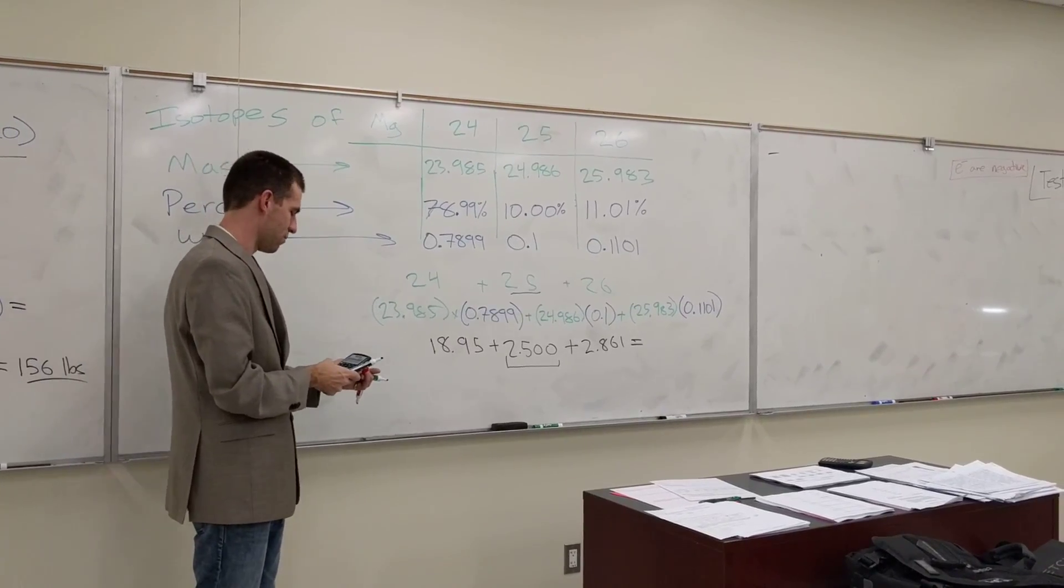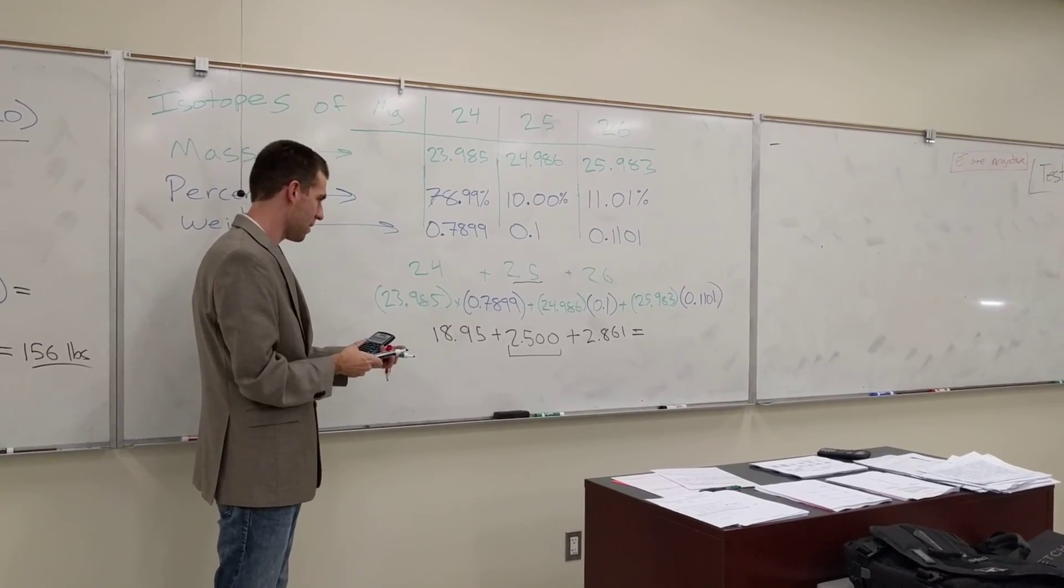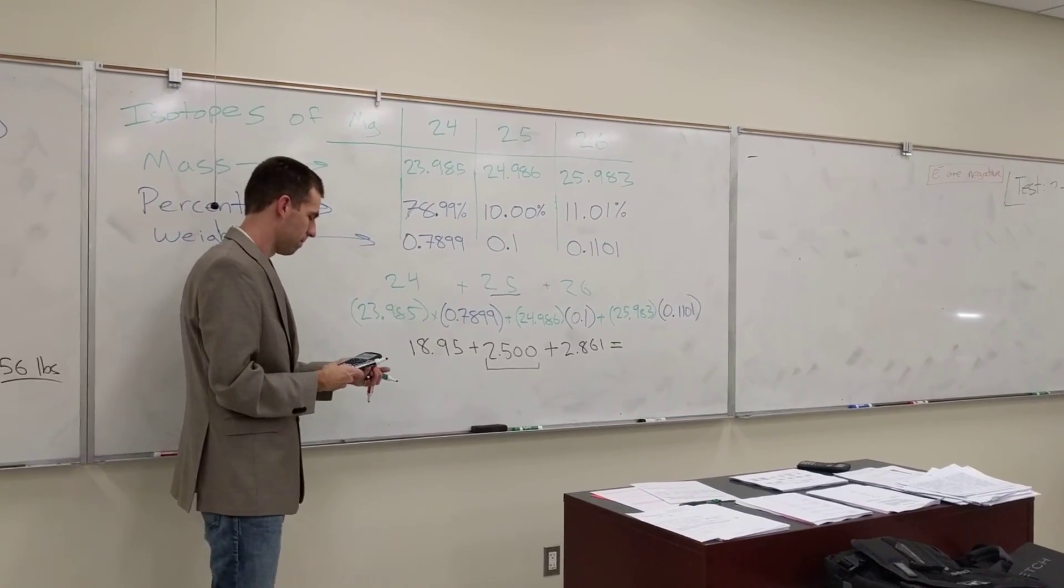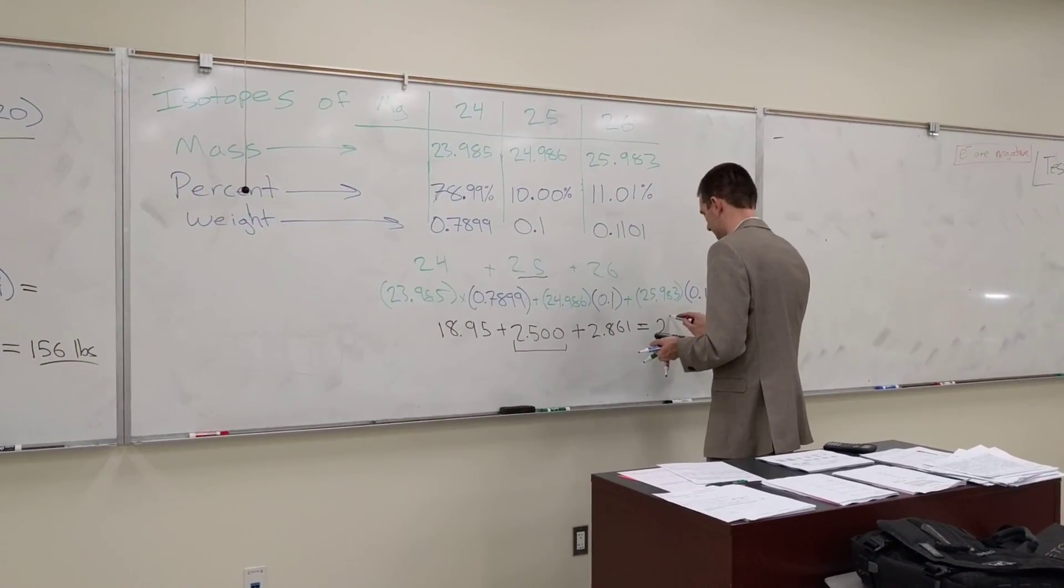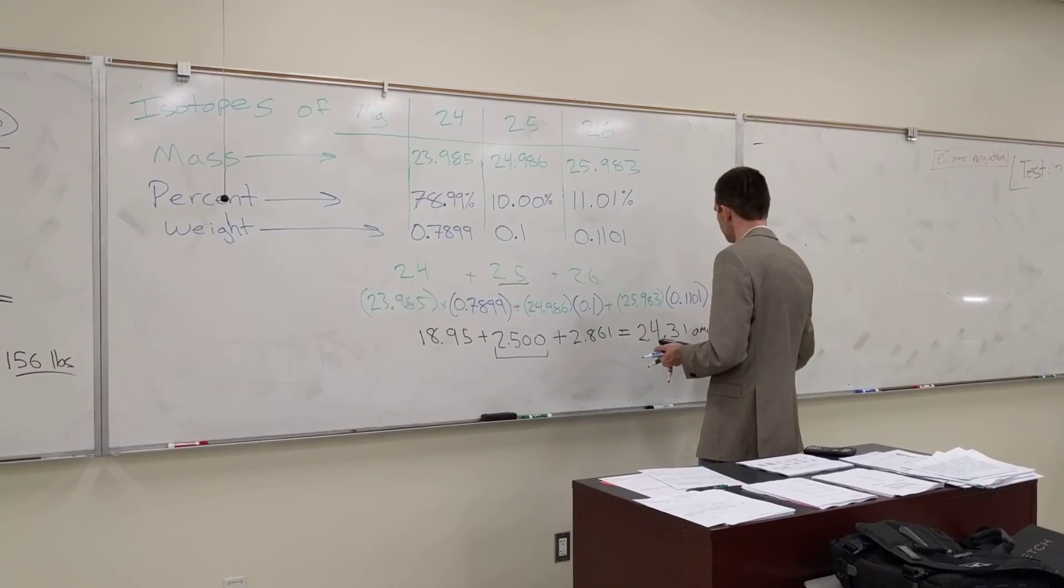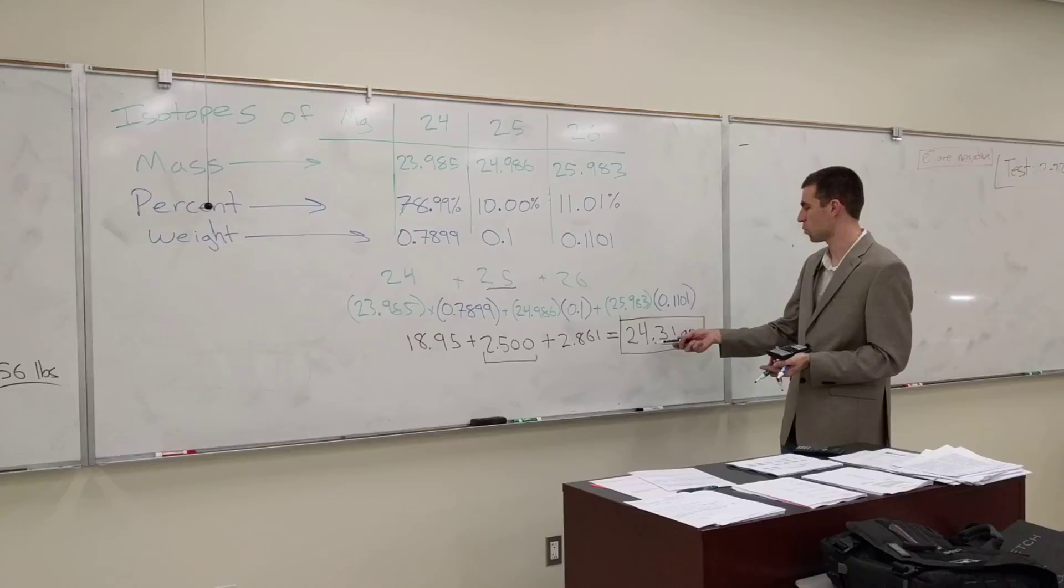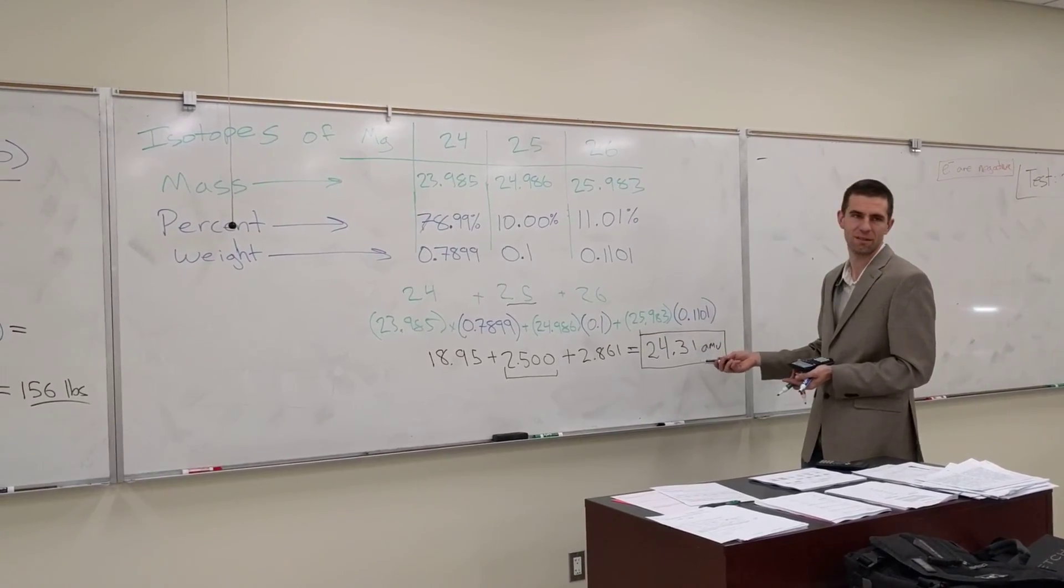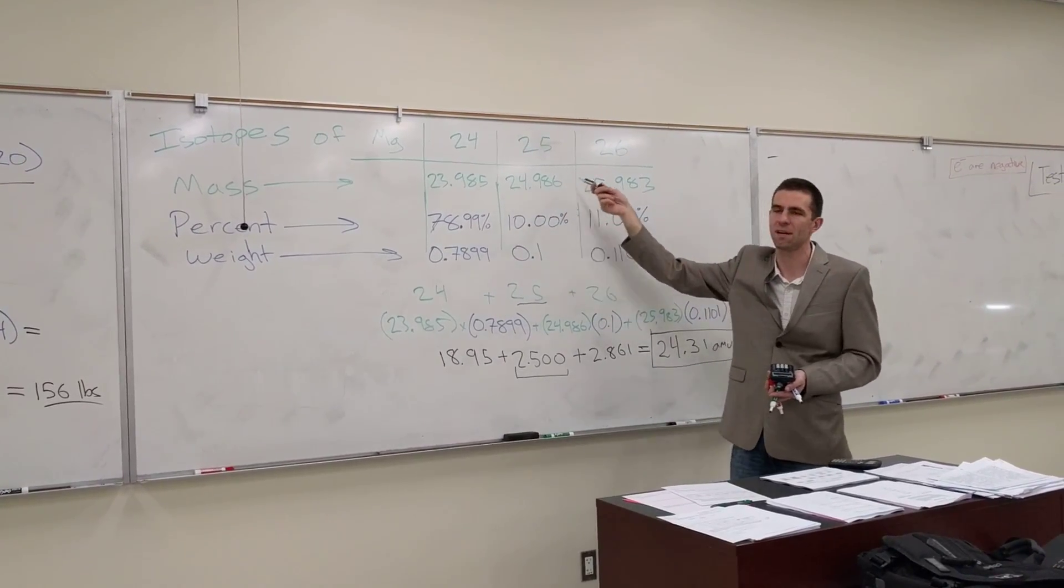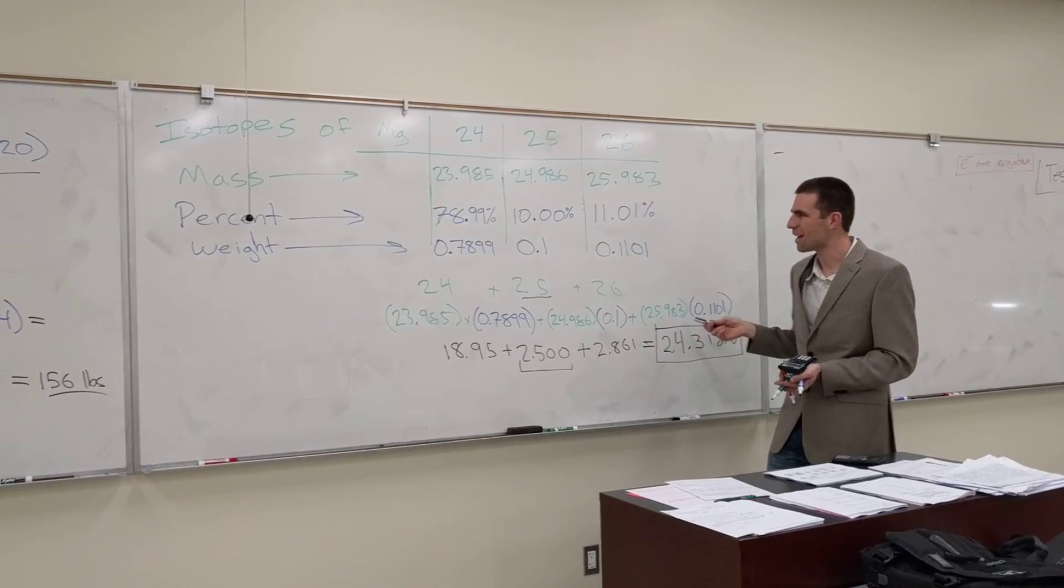By the way, last question that's really important to ask in these. When I'm calculating my answer, where had it better be? Like, what do you know it has to be above and below? So we get 24.31 AMU. That is above the smallest and below the biggest. If you don't get something between the smallest and the biggest, you've done something horribly wrong. So that's how you calculate these.